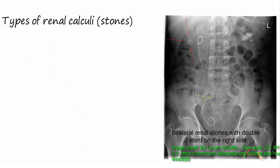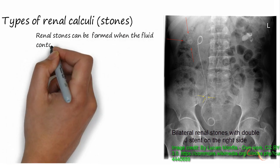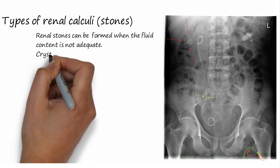Renal stones can be formed when the fluid content is not adequate. Crystallization of salts and minerals present in the urine leads to stone formation.